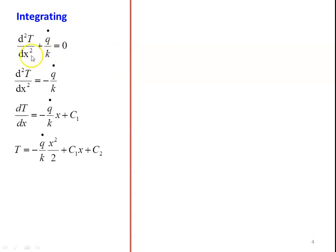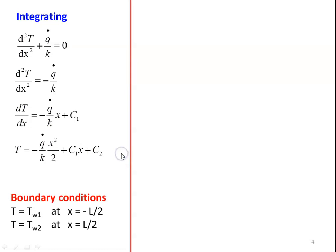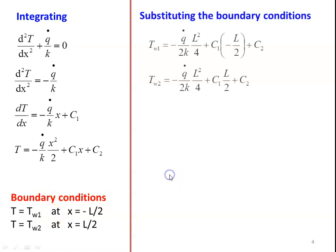Now integrating the governing equation d²T/dx² + q̇/k = 0. Rearranging: d²T/dx² = -q̇/k. Integrating first time: dT/dx = -q̇/k · x + C1. And integrating again: T = -q̇/k · x²/2 + C1·x + C2. Applying the boundary conditions, we get TW1 = -q̇/(2k) · L²/4 + C1·(-L/2) + C2, and TW2 = -q̇/(2k) · L²/4 + C1·(L/2) + C2.